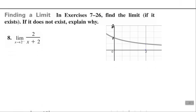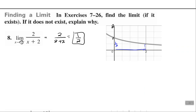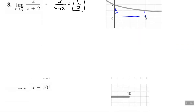Here we have the limit of 2 over (x + 2) as X approaches 2 from the left. We can still substitute in if we can, and that's what we will do. Looking at the graph, as X approaches 2 from the left, the function is approaching one-half. Let's substitute the 2 in — that's 2 over 4, or one-half.